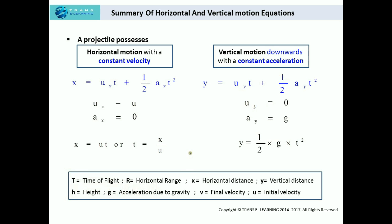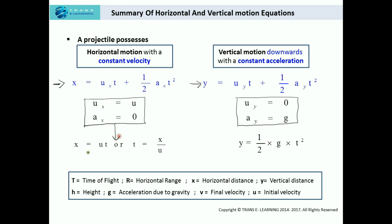Before proceeding further, let us quickly review the horizontal and vertical motion equations. I have discussed them in detail in the video related to the summary of horizontal and vertical motion equations. This is just a glance: in horizontal motion we consider two conditions, and in vertical motion of the projectile we also consider two conditions. The end results are: x equals ut, where x is horizontal distance, u is initial velocity, and t is time of flight. And y is vertical distance, g is acceleration due to gravity. In horizontal motion the projectile moves with constant velocity, and in vertical motion the projectile moves with constant acceleration.